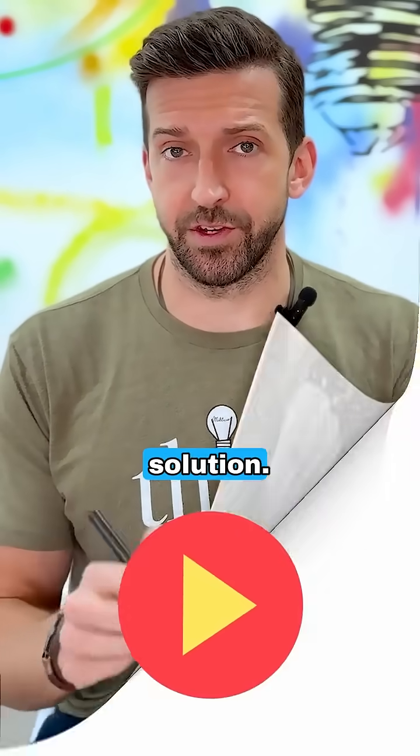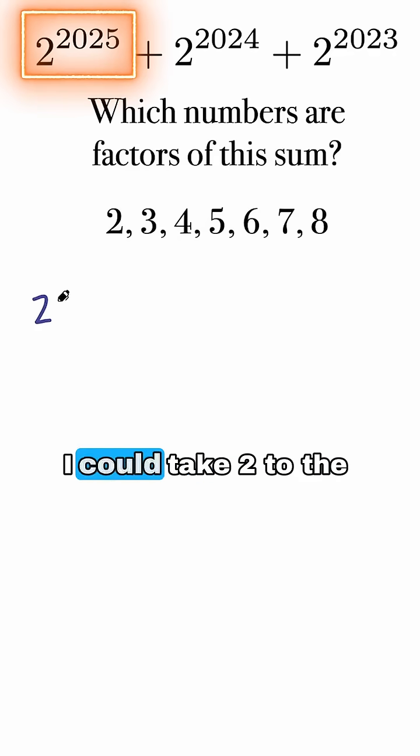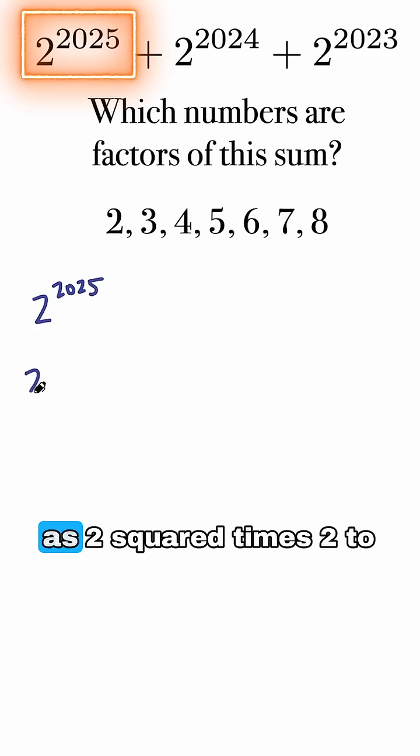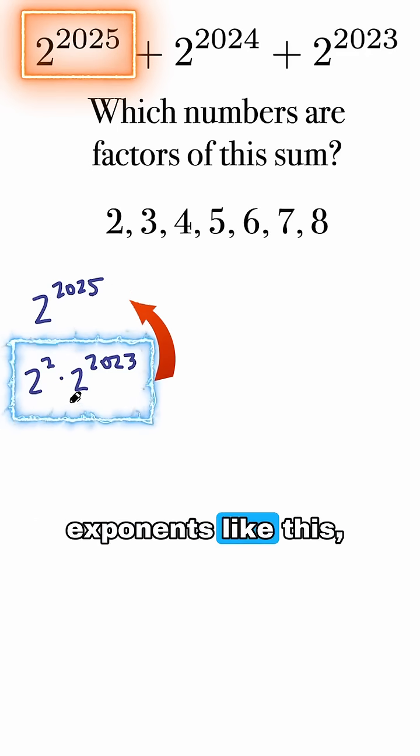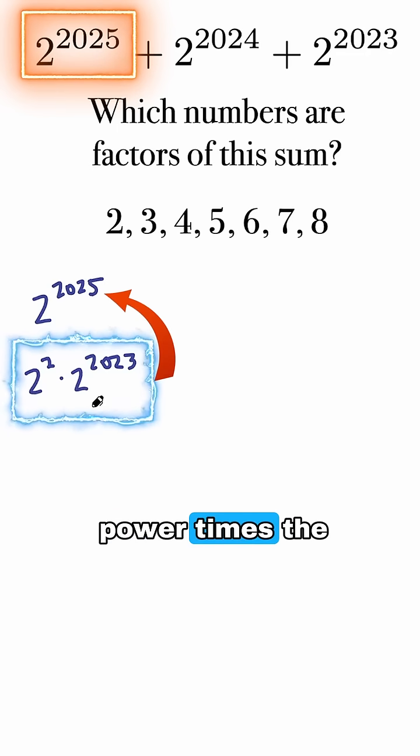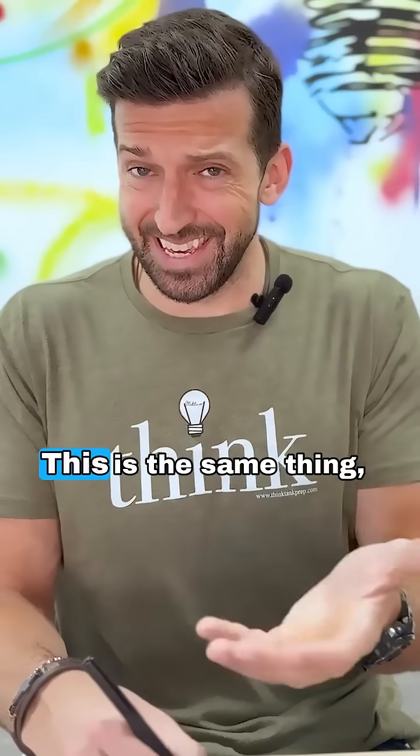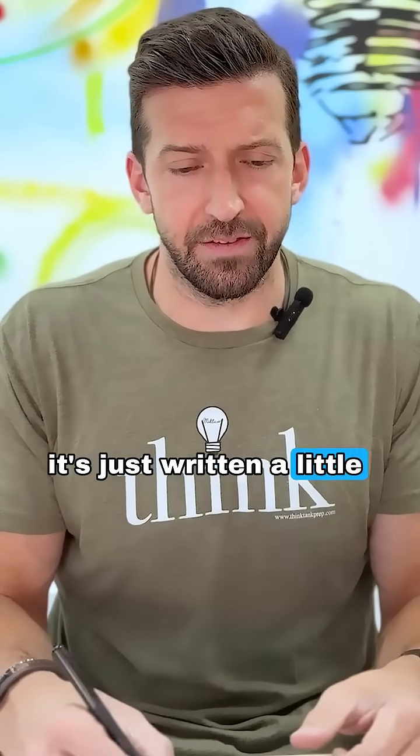Then hit resume when you're ready for the solution. Let's start with the rule of exponents. I could take 2 to the 2025th power, and I could write that as 2 squared times 2 to the 2023rd. When I combine exponents like this, when I have a base to a power times the same base to another power, I add the two powers. This is the same thing, it's just written a little bit differently.